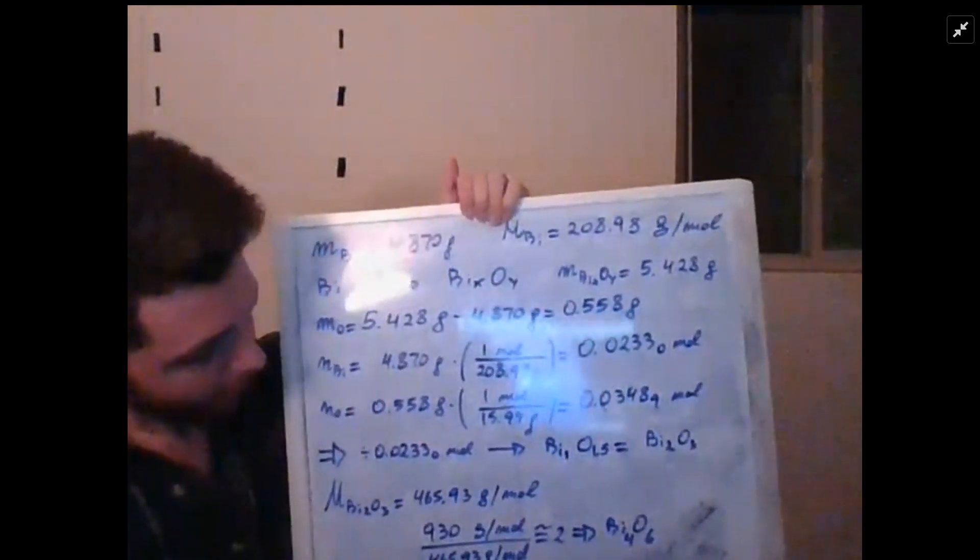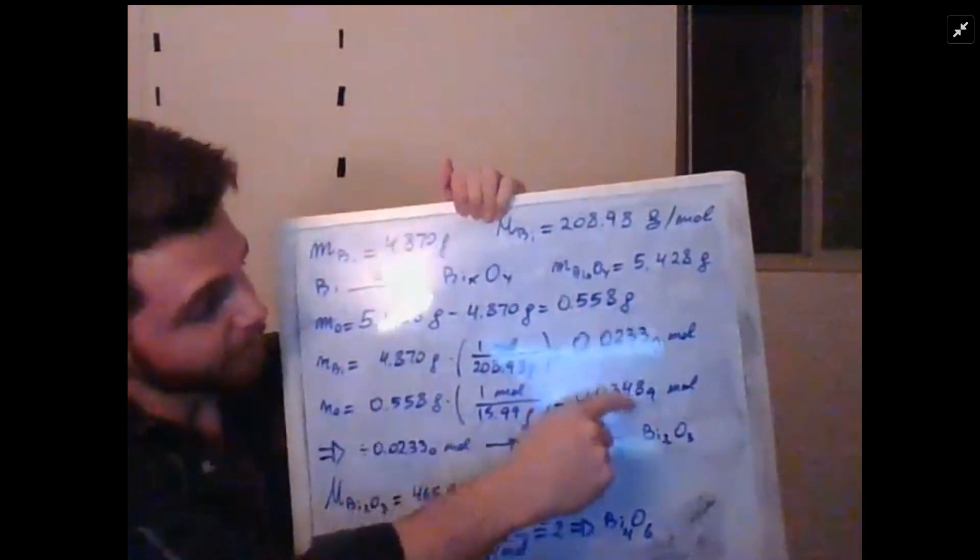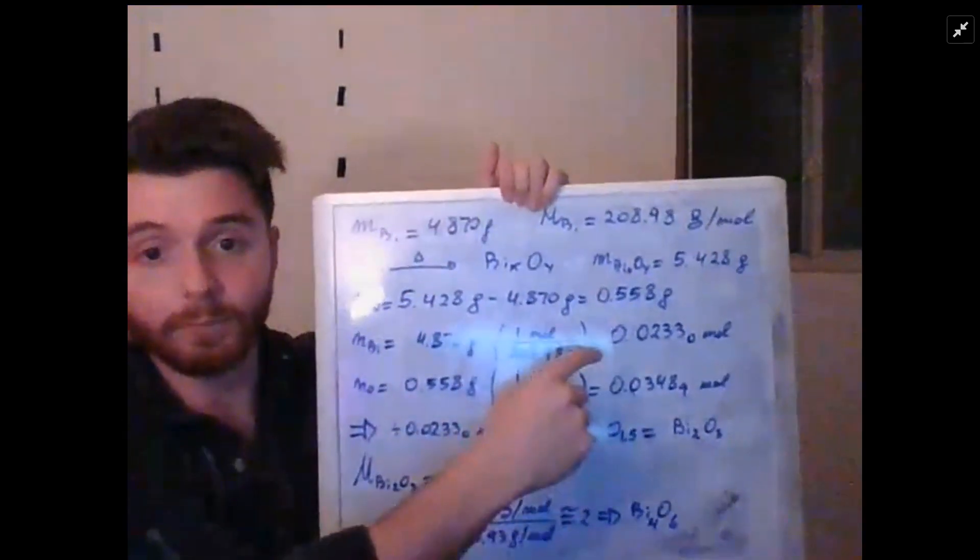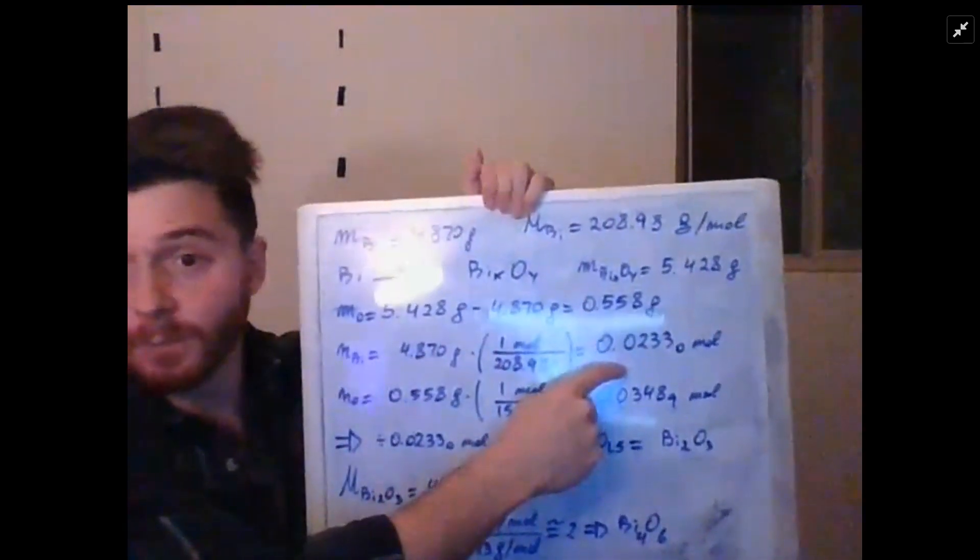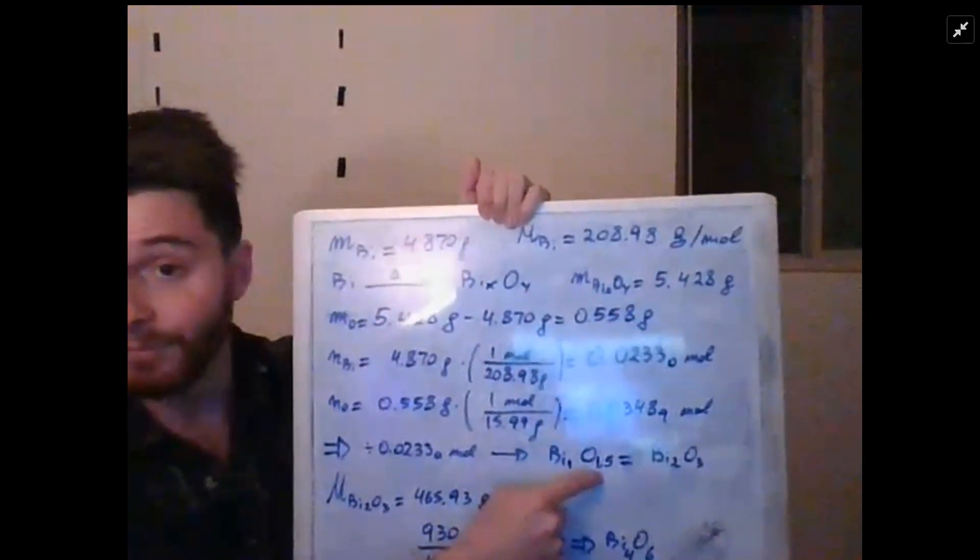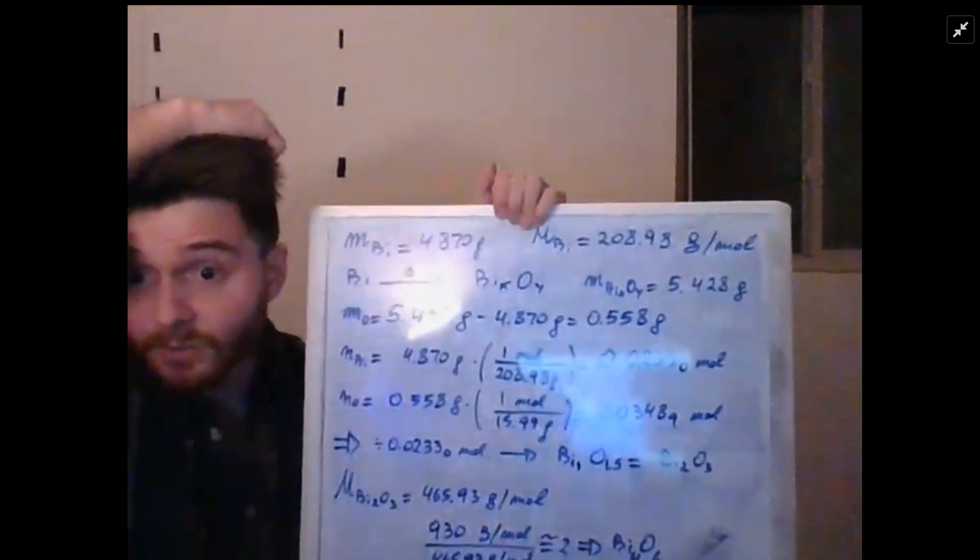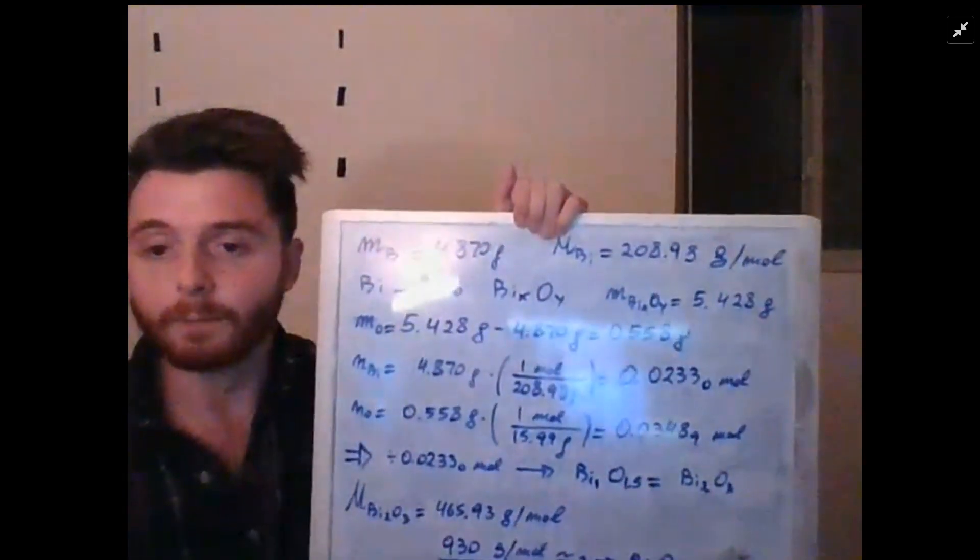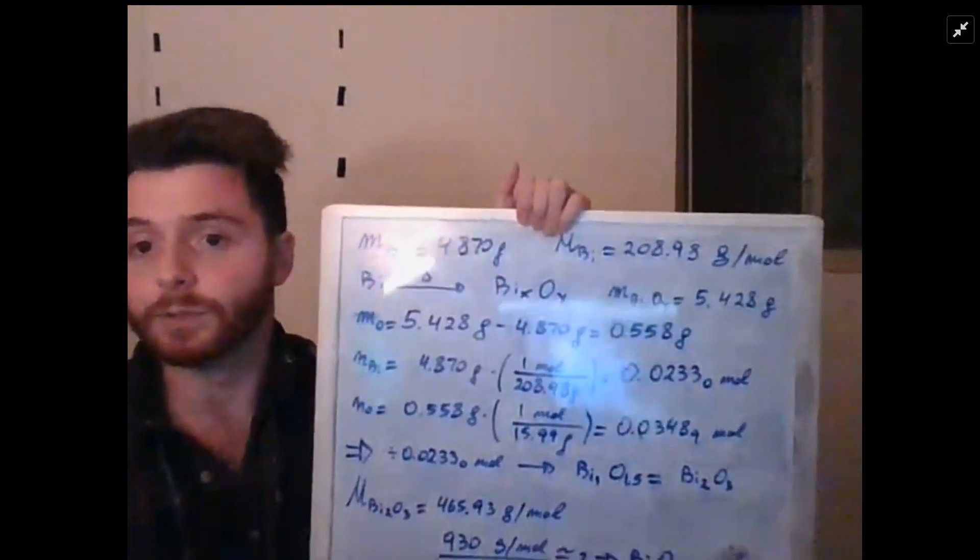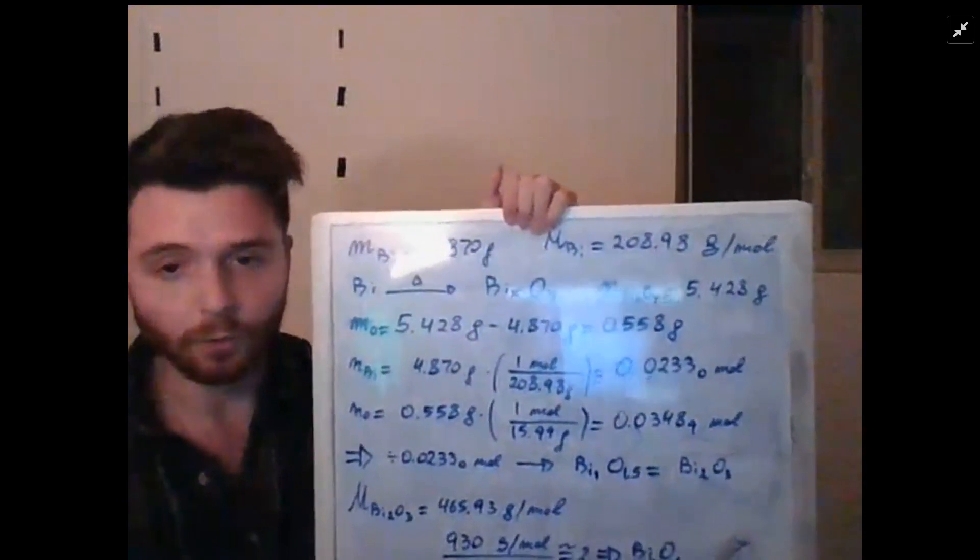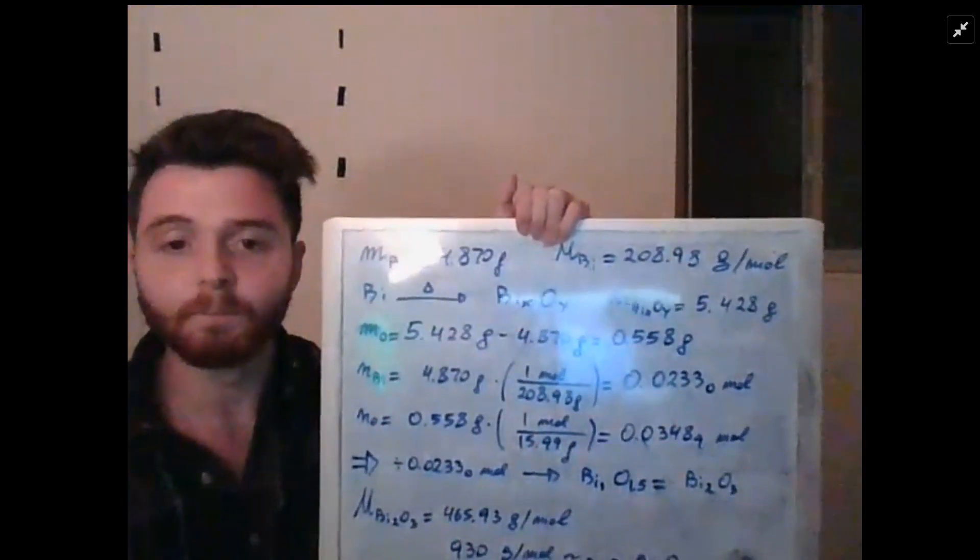We divide both of these by the lowest number, so in that case it would be the moles of bismuth, and we get bismuth 1 and oxygen 1.5. In chemistry we rarely, actually never, have stoichiometric amounts that are not integers, or subscripts that are not integers.